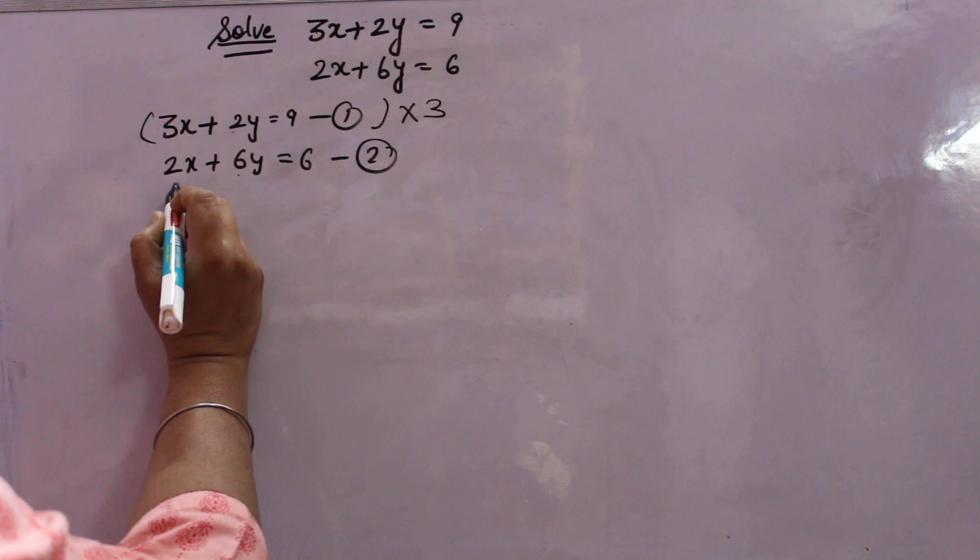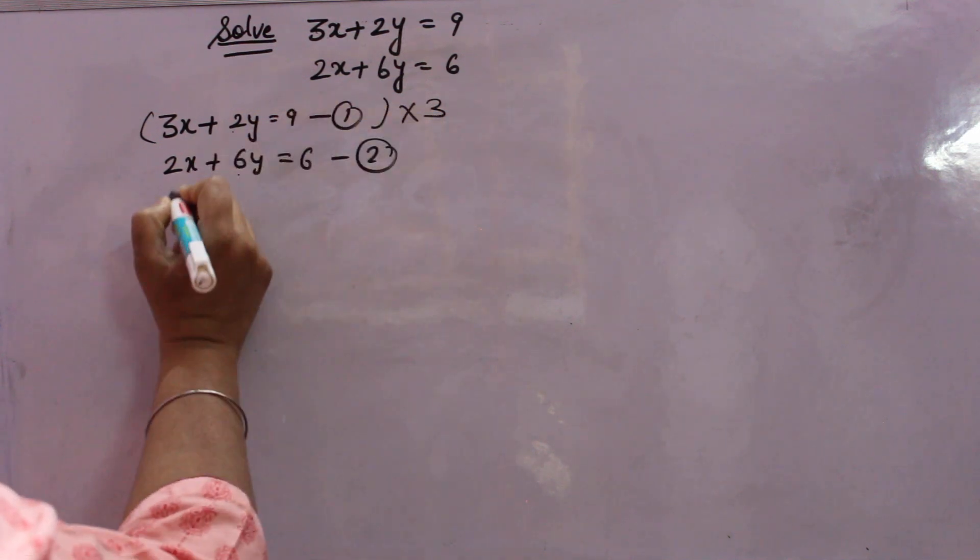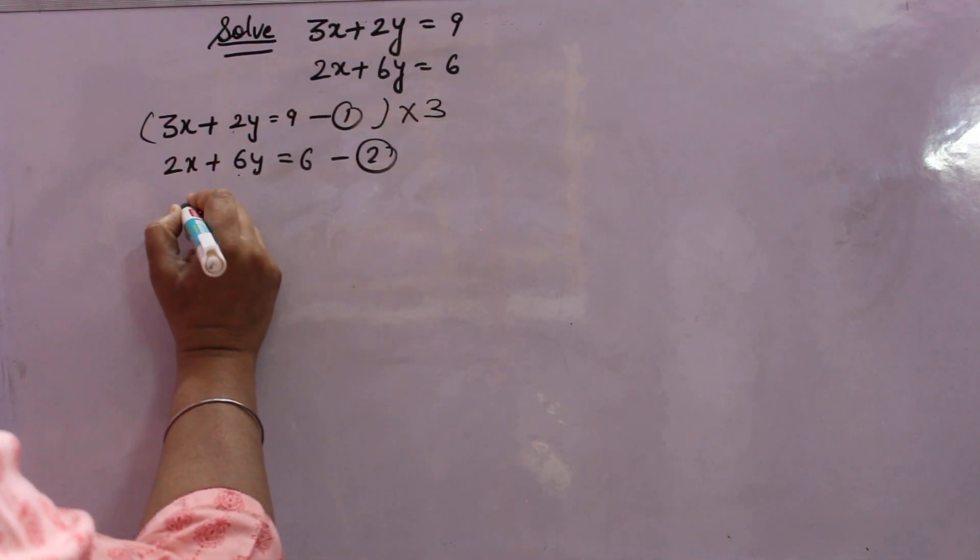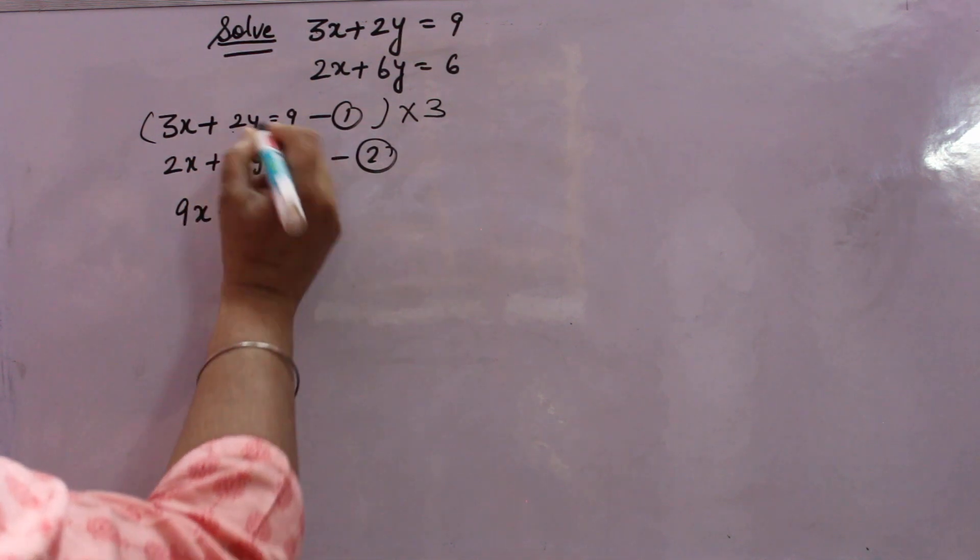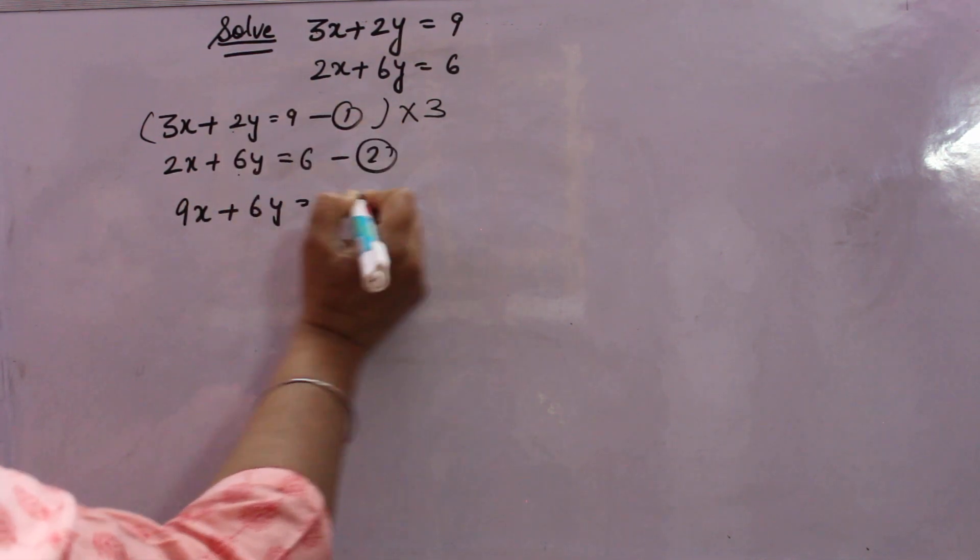That way also you can solve. I feel this way easy. Therefore, I am using this way. 3 into 3 is 9. 9x plus 2 into 3, 6y is equal to 9 into 3. These are 27.